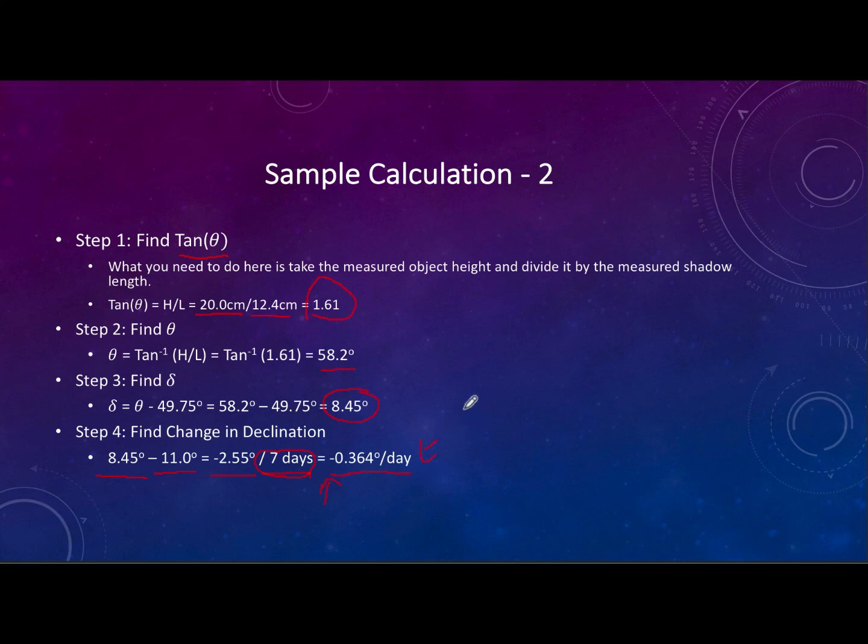When you do these calculations with your data you will find that the change in declination number varies a lot for your data. You will see lots of errors. This is very sensitive to errors. So if you have errors in your measurements which are expected, you will find that this number jumps around a lot and that is perfectly fine on yours.